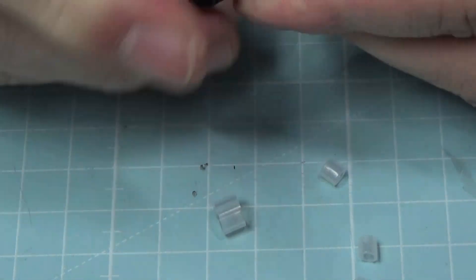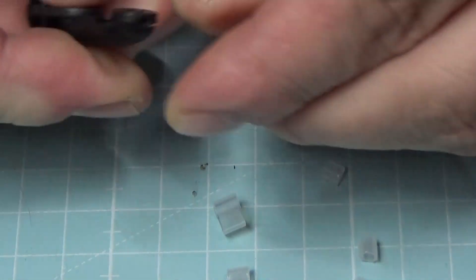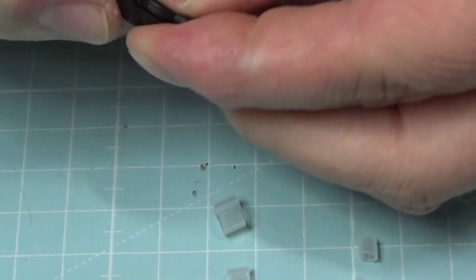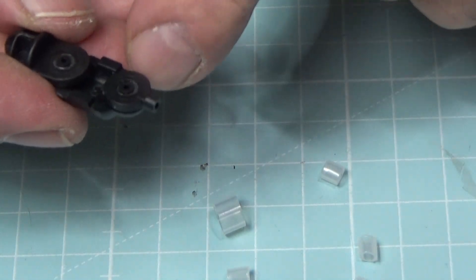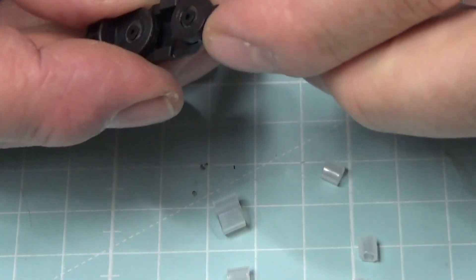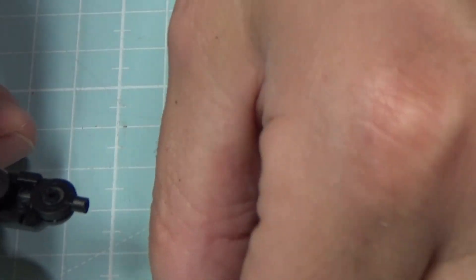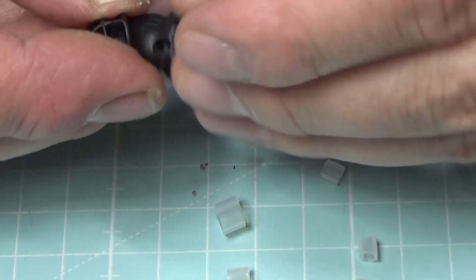Dann nehmen wir mal die ersten Teile. Wir brauchen hier den mit den Nupsis. Mal alles ein bisschen beiseite, damit wir uns auf den dicken Daumen konzentrieren können. Und hier kommen dann diese Ringe rüber, so wie bei den anderen Fingern beim letzten Mal auch. Dann kommt die Daumenkuppel. Da müssen wir dann aufpassen, wie rum wir das Ganze machen. Und zwar so rum.